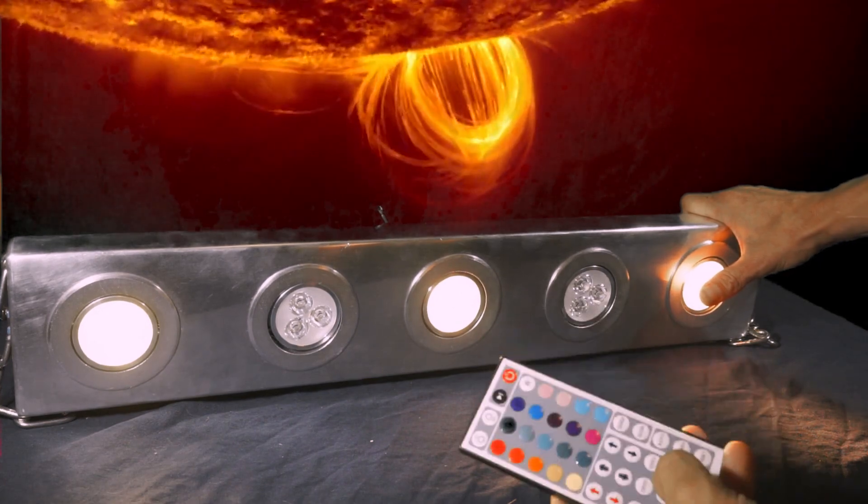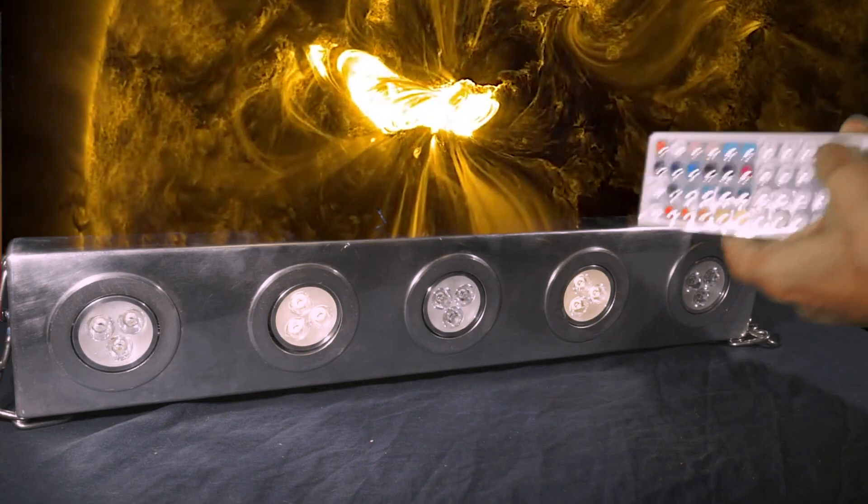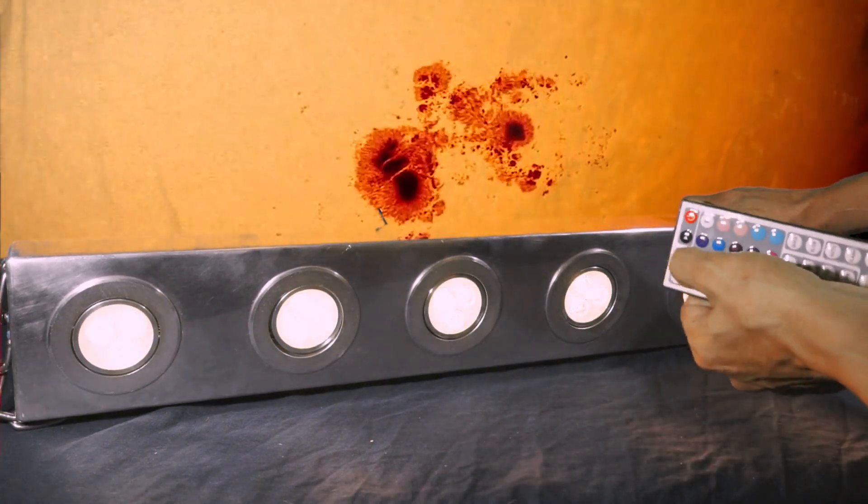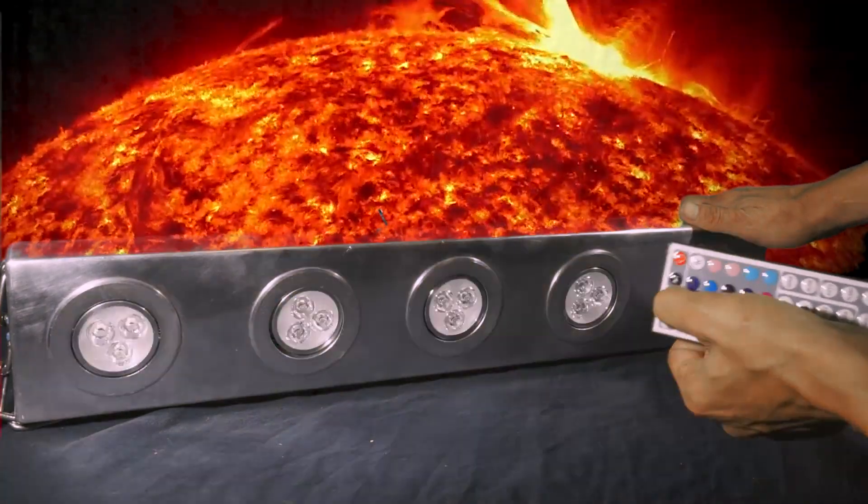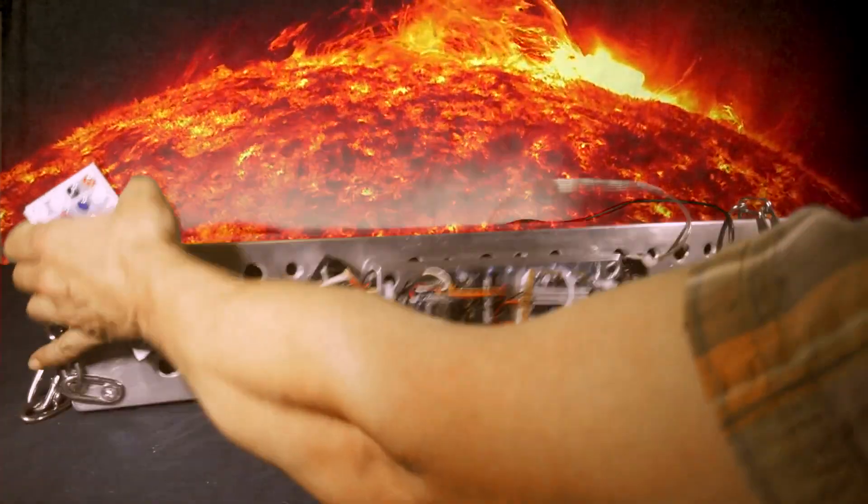Here are some of the presets on the IR controller, a generic controller you get off eBay for like a dollar fifty. Forty-four buttons on the IR remote. That's a solar flare in the background on our sun.